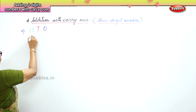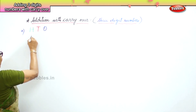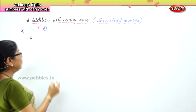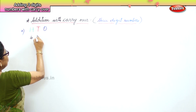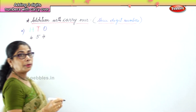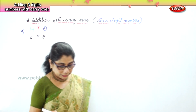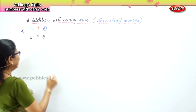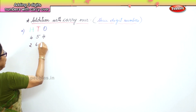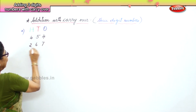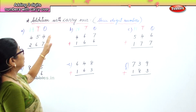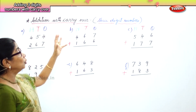The first sum I have for you is four hundred and fifty-four plus two hundred and sixty-seven — 454 plus 267 — and we are doing addition with carryover for three-digit numbers.